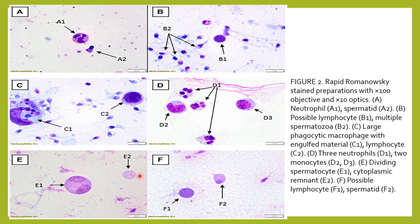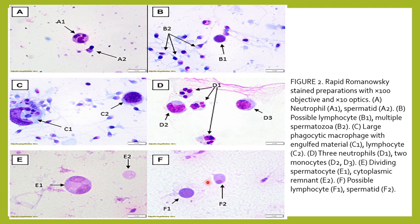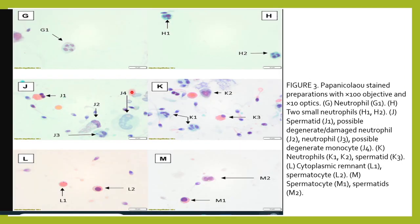This is a Romanowski stain where you can see a neutrophil here, and this would be a spermatid. This could be a possible lymphocyte at B1. Here you can see the large phagocytic macrophage which has engulfed certain material. Here you can see three neutrophils. You can see the dividing spermatocyte here. This is a lymphocyte and this could be a spermatid. Usually, germ cells have a pinkish cytoplasm, whereas neutrophils have more of a bluish tinge on Romanowski stain. Nuclear features also help to differentiate them.